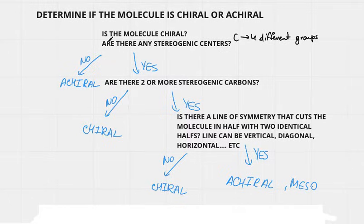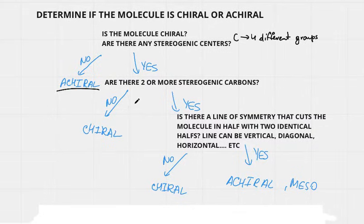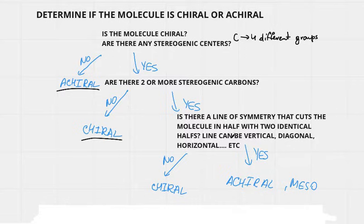Going back to our chart: are there any stereogenic centers? If the answer is no, the molecule will be achiral. If the answer is yes, we ask another question: are there two or more stereogenic carbons? If no, the molecule is chiral. If yes, we ask yet another question: is there a line of symmetry that cuts the molecule in half with two identical halves? The line of symmetry can be vertical, diagonal, or horizontal.